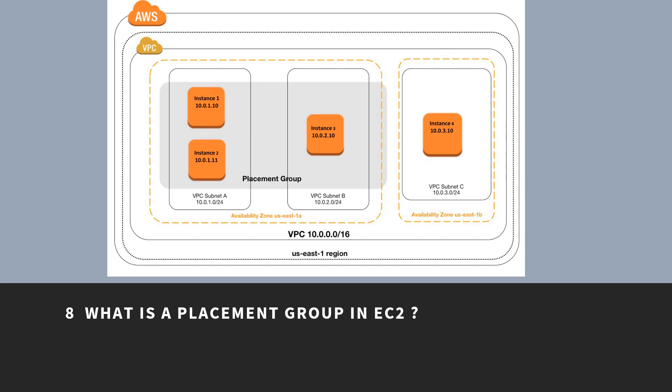What is a placement group in EC2? AWS provides an option of creating a placement group in EC2 to logically group instances within a single availability zone. You get the benefits of low network latency and high network throughput by using placement groups. Placement groups are a free option. When you stop an instance in a placement group, it will restart in the same placement group at a later point in time.